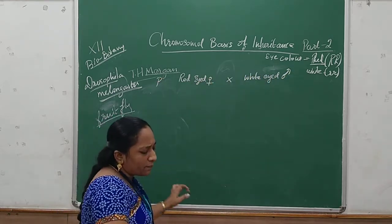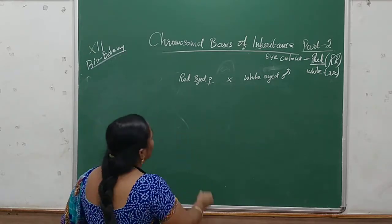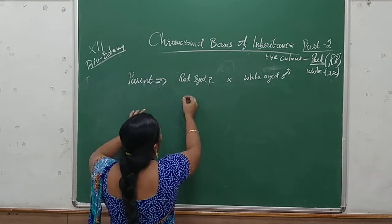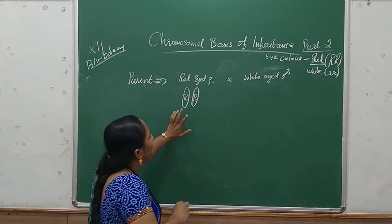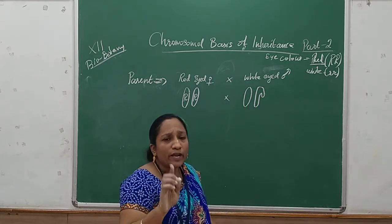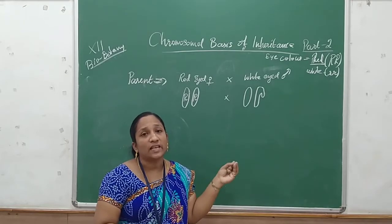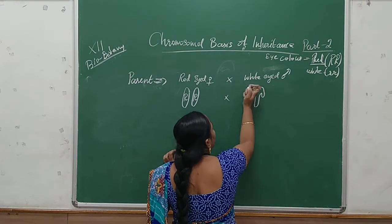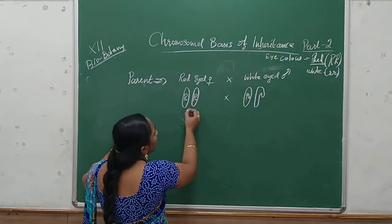Let's do a cross between the normal red-eyed female with white-eyed male. This is the parent cross. Female means two X chromosomes, and it is red color — expressed as capital R capital R. It is crossed with male, who has one X chromosome and one Y chromosome. Normally Y chromosome doesn't have any gene — only the X chromosome carries genes that are inherited. That is why it is called sex-linked inheritance. White-eyed male is expressed as small r on X and Y has no gene.